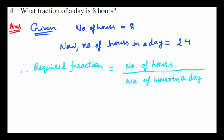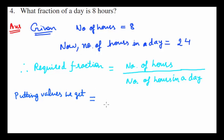Total 24 hours are present in a day. Putting in values, in place of number of hours we place eight and number of hours in a day we place 24, so eight over 24 is your answer.